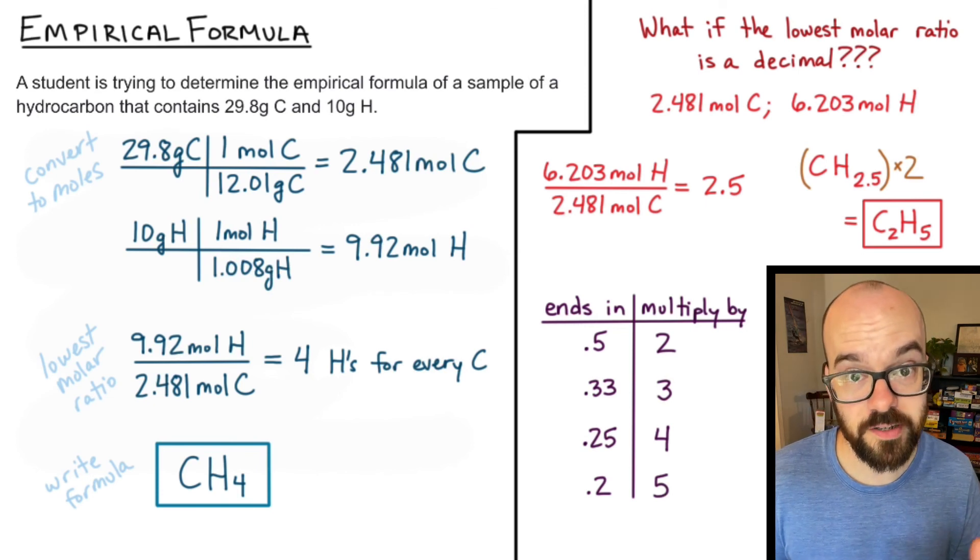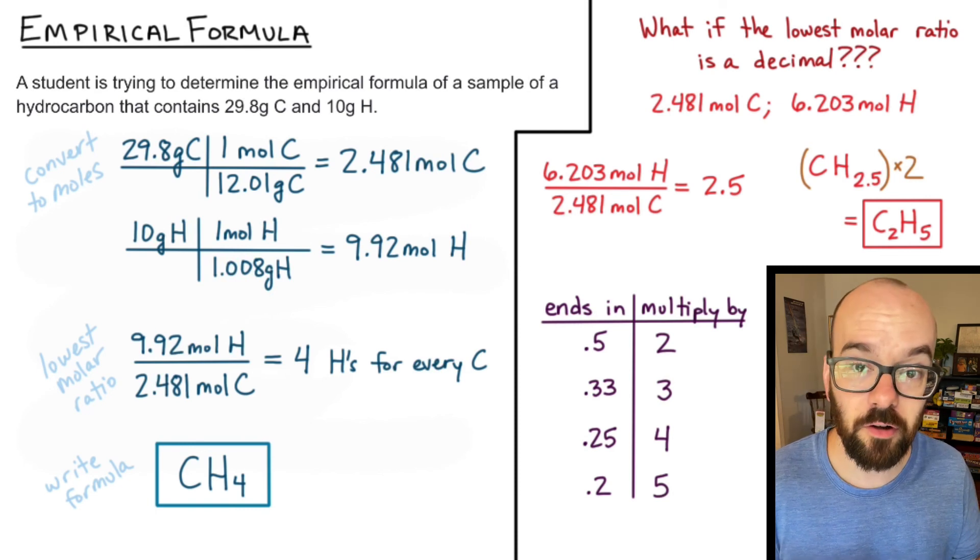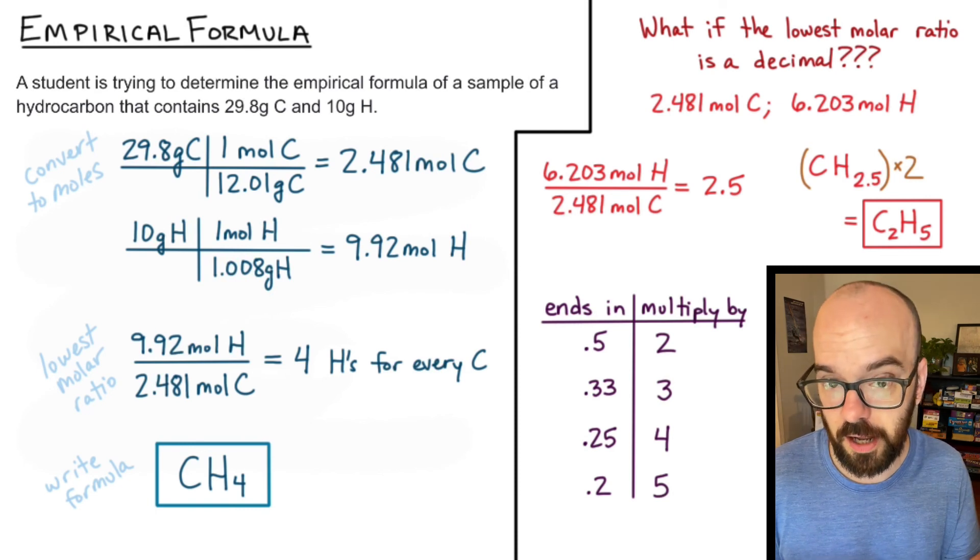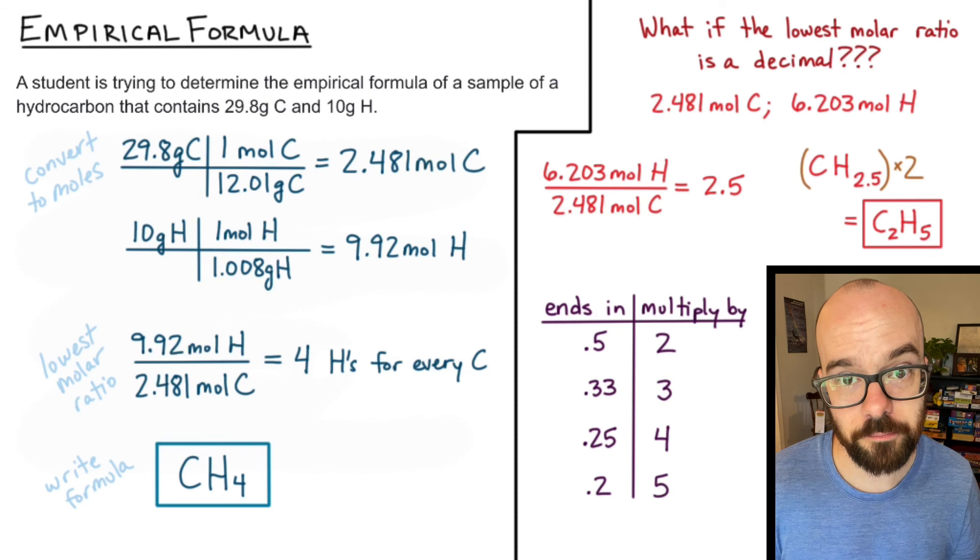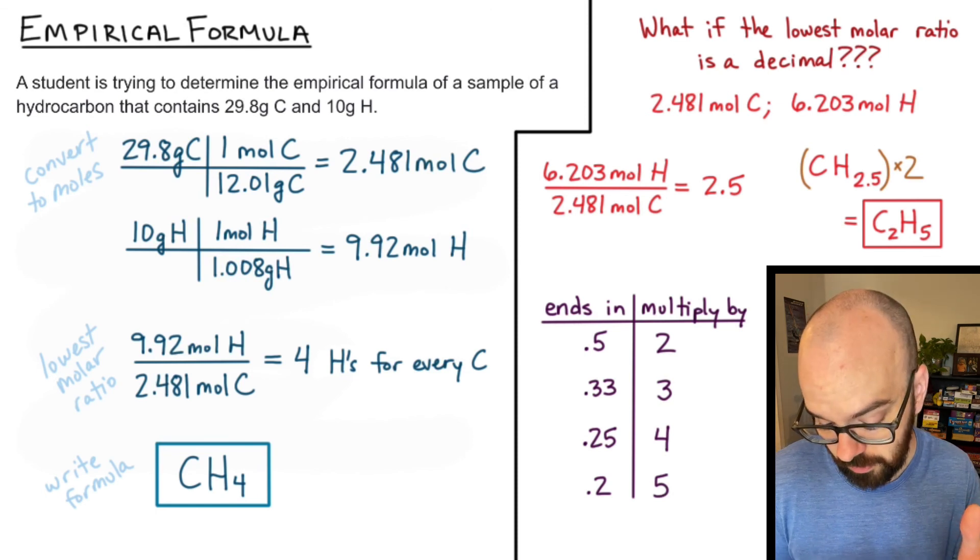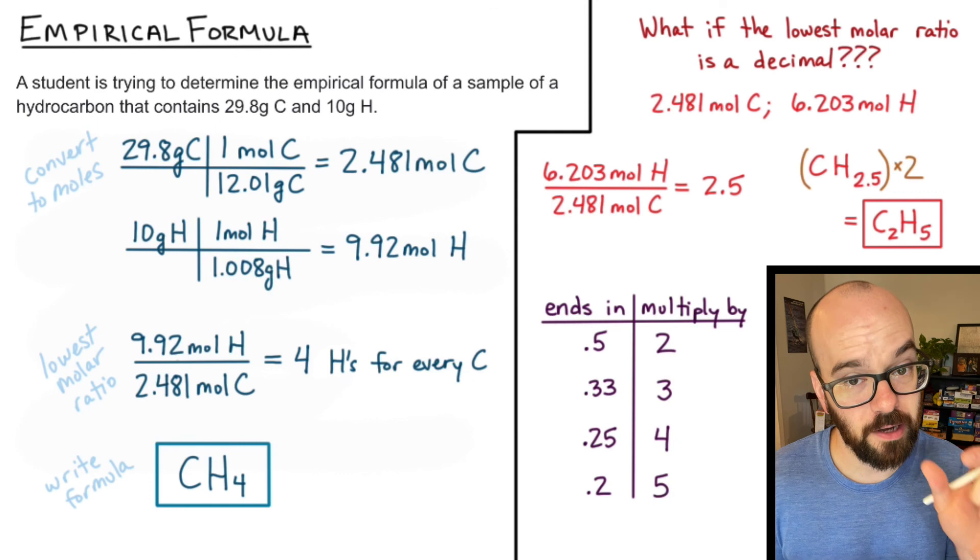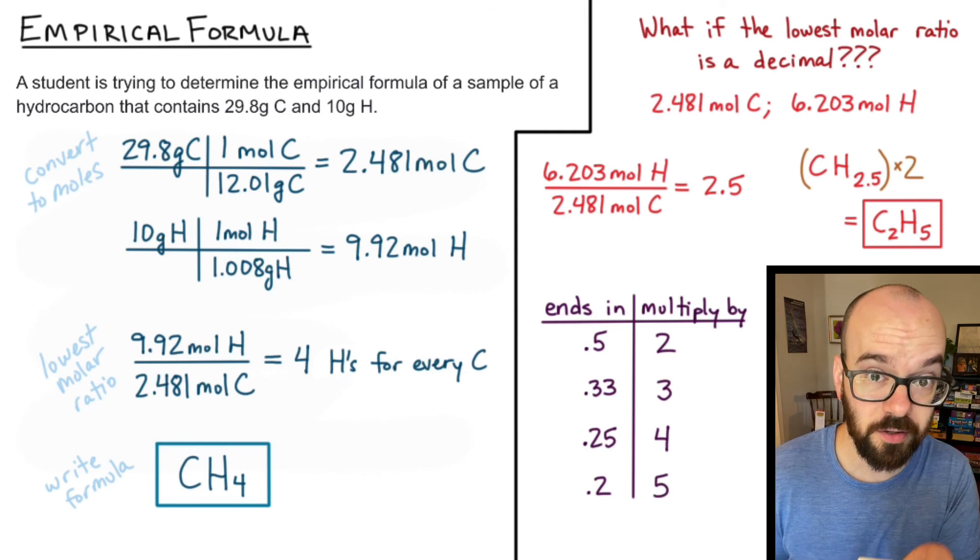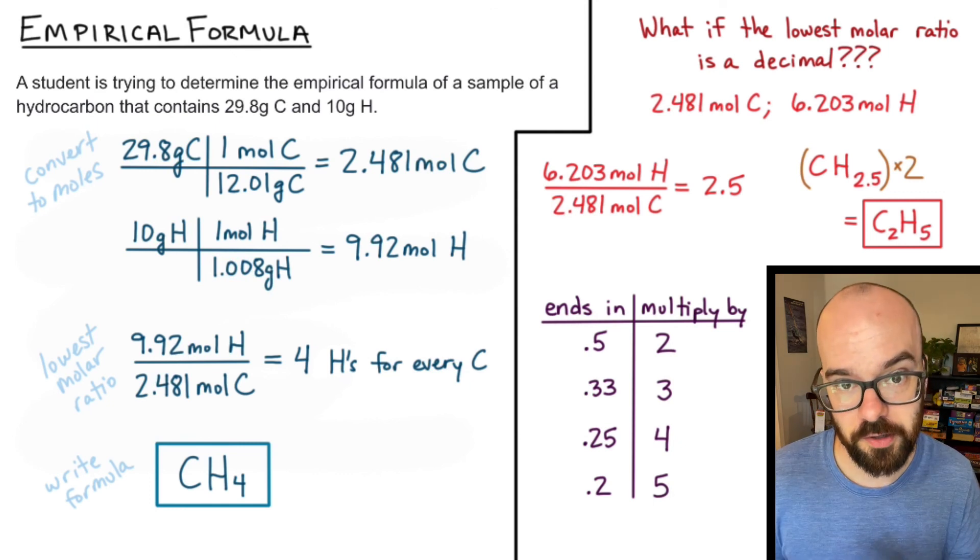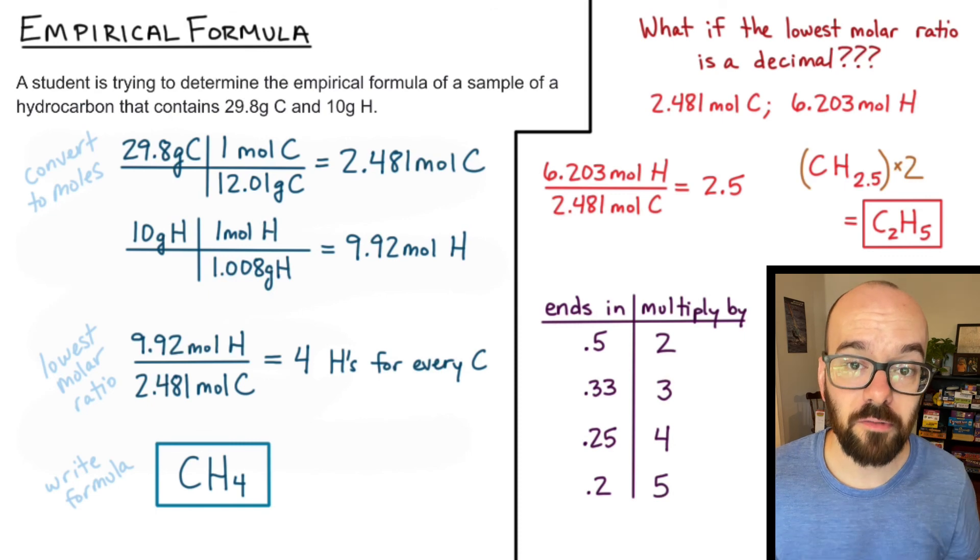But those would be the four most common ones that you might encounter whenever converting from grams of elements in a compound to the empirical formula. Again, take the grams of each element, convert to moles, then find the lowest molar ratio by dividing the fewest number of moles into the other numbers of moles that you got for each element. And then from there write your empirical formula.